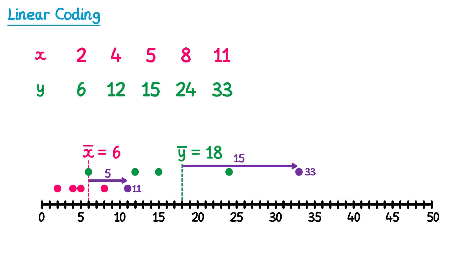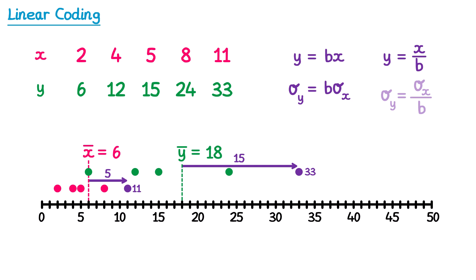So the standard deviation will be 3 times greater. If we code data by multiplying by a number, for example 3, then the standard deviation of the coded data, sigma y, will be 3 multiplied by the original standard deviation, sigma x. More generally, if the data was coded by multiplying by a number b, then the coded standard deviation will be b multiplied by the original standard deviation. The same idea works for division — if we coded the data by dividing by b, then the coded standard deviation will be the original standard deviation divided by b.